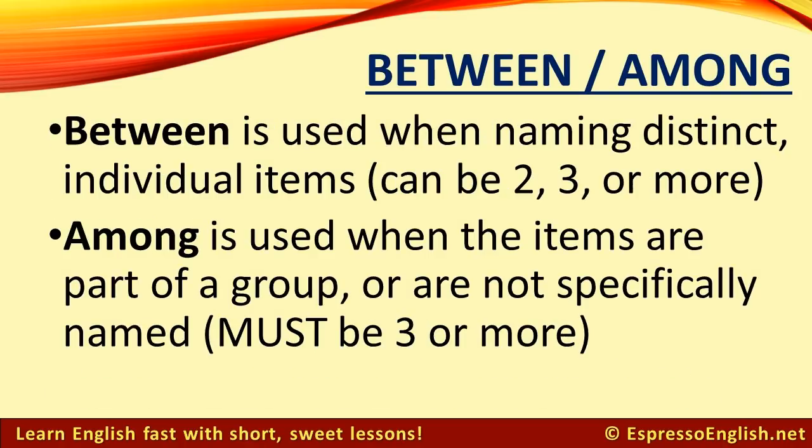Between is used when naming distinct individual items. It can be two items, three items, or more. And among is used when the items are part of a group, or are not specifically named. And to use among, it must be three or more things.